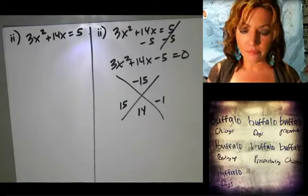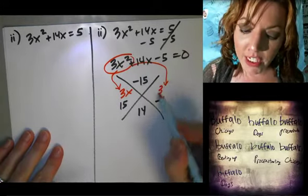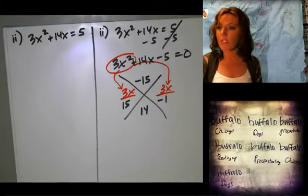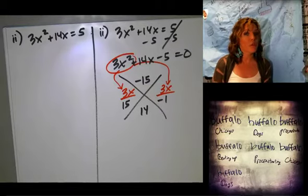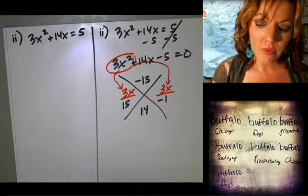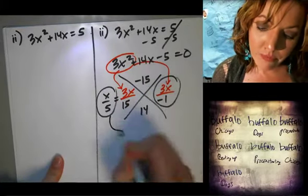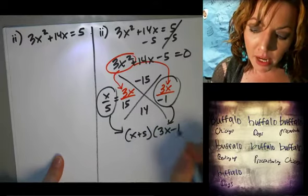Now what? Ashley. Now we distribute 3x. Good. 3x. Always bring that coefficient down because we want to reduce anything extra that we don't need there. So anything that can be reduced? What? Jade? 3x and 15, so it'd be x over 5. Good. x over 5. Everybody give it up for Jade. So x plus 5 times 3x minus 1 equals 0.